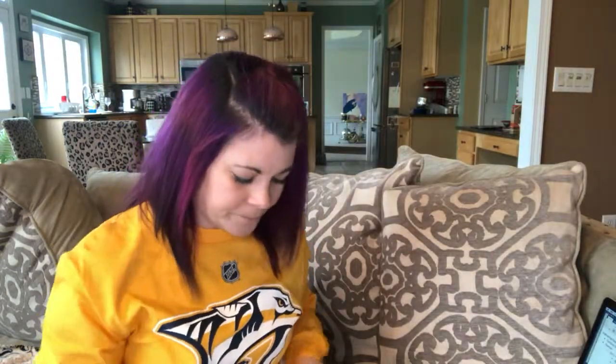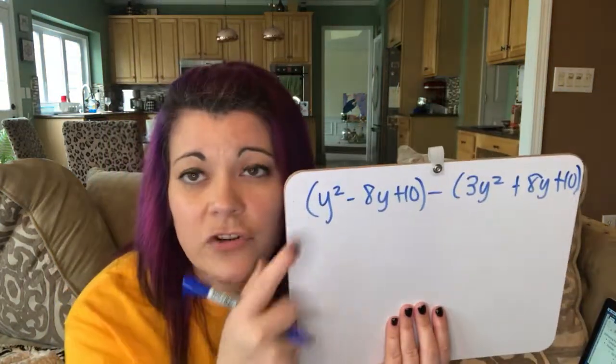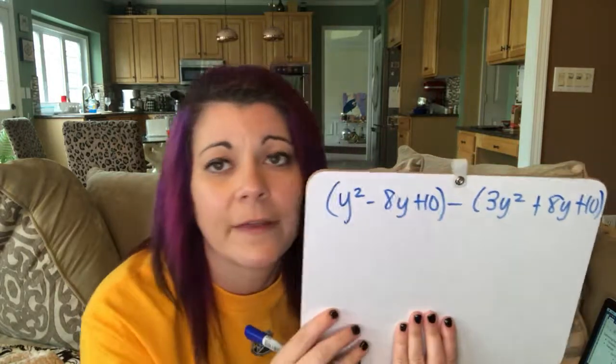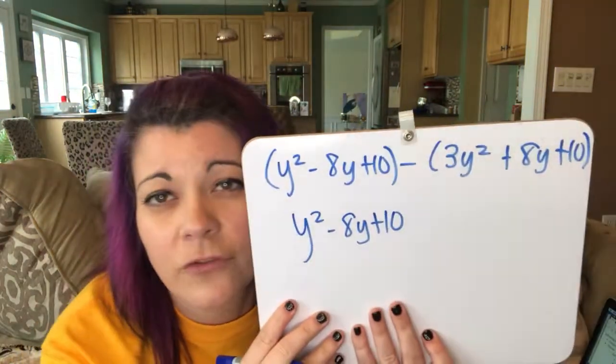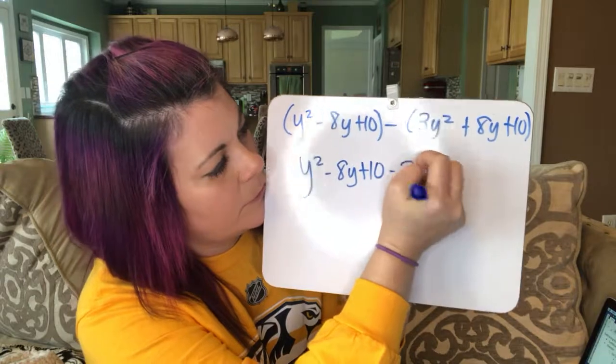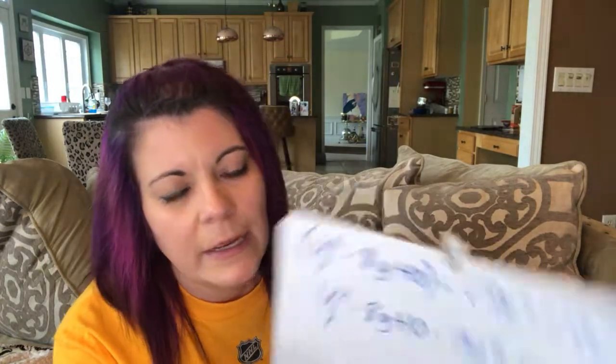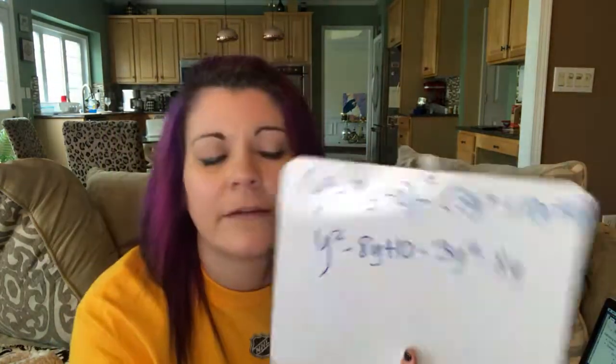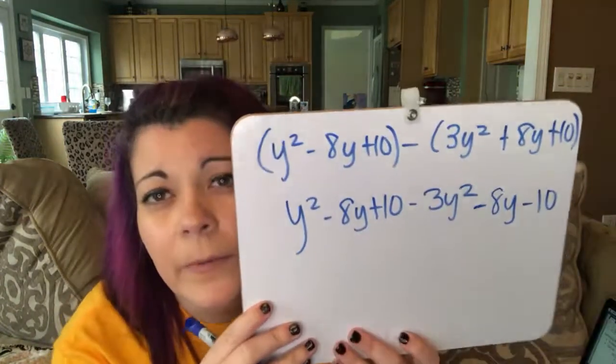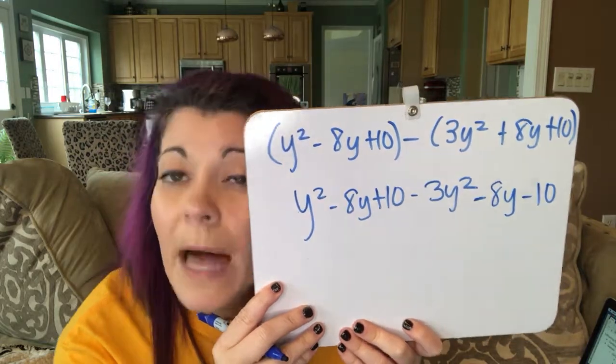Let's do one more. We have y squared minus 8y plus 10, minus 3y squared plus 8y plus 10. We can drop the parentheses for the first one and rewrite, then take the opposite of everything in the second parentheses. The opposite of 3y squared is negative 3y squared — so minus 3y squared. The opposite of 8y is negative 8y — so minus 8y. And the opposite of positive 10 is negative 10 — so minus 10. We've taken the opposite of everything in the parentheses behind the subtraction sign.